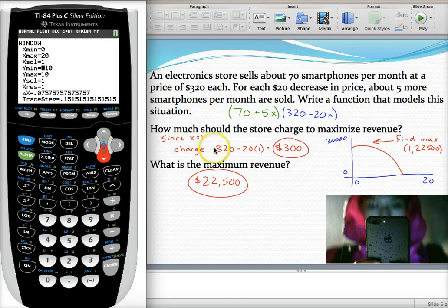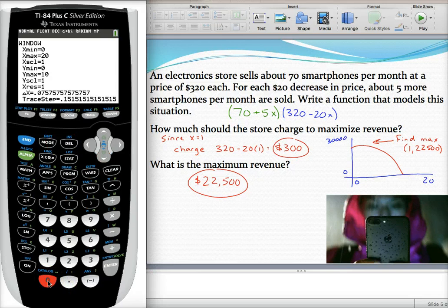For your Y min and Y max, this represents your revenue, your output. Again, for a minimum, you could make $0. It would be really bad for business, but you could make $0. And then for your Y max, I really don't know, but here's a trick that I like to use for these problems.